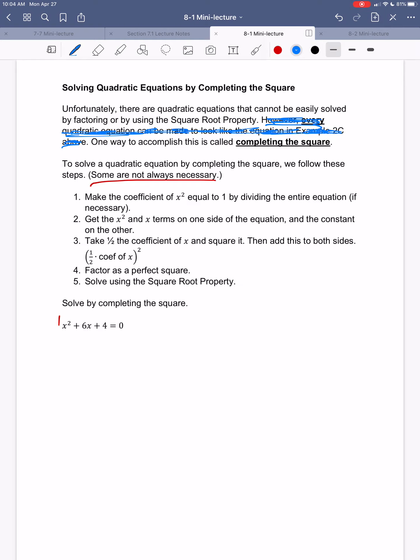Step two says, get the x squared and x terms on one side of the equation, and the constant on the other. So that's a problem here. So, I want to move this constant to the other side of the equation. The way I'm going to do that, then, is very simply just subtract four. So, if I do that, I get x squared plus six x equals negative four.